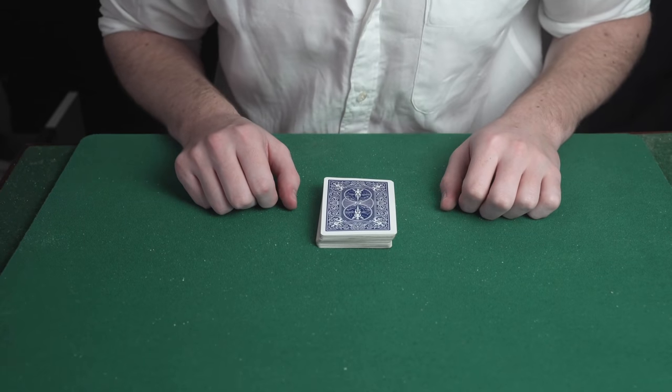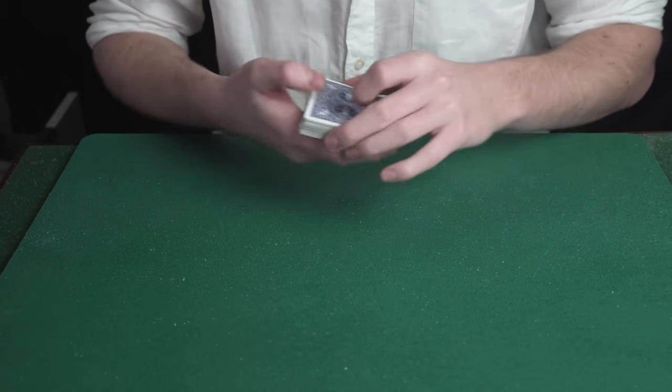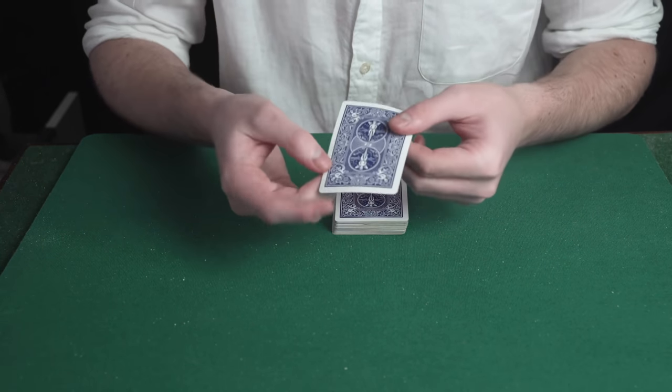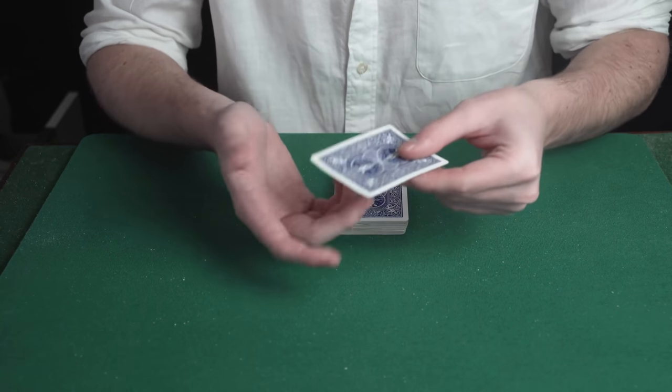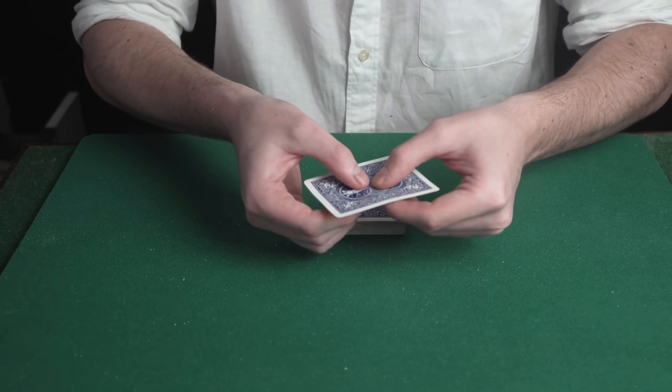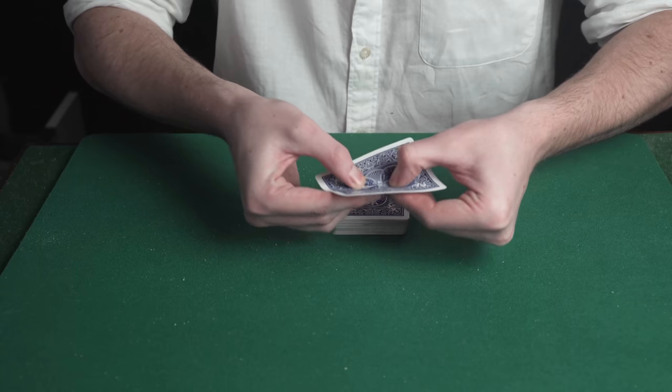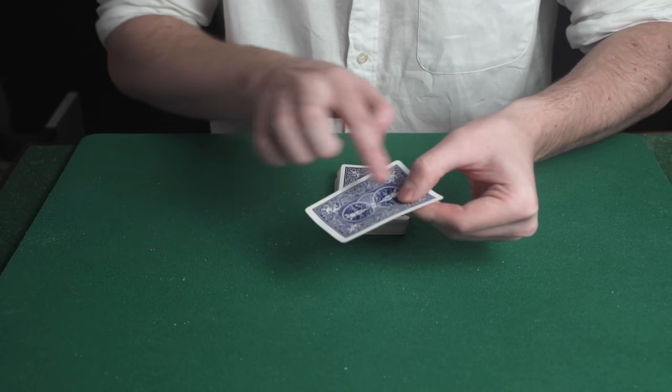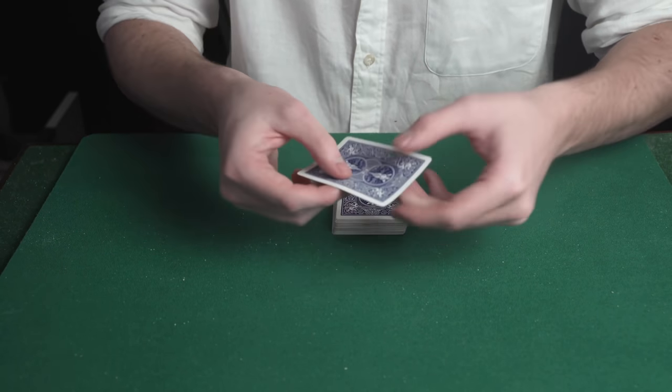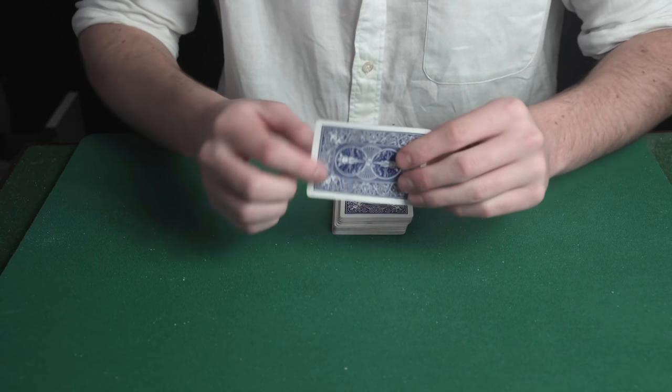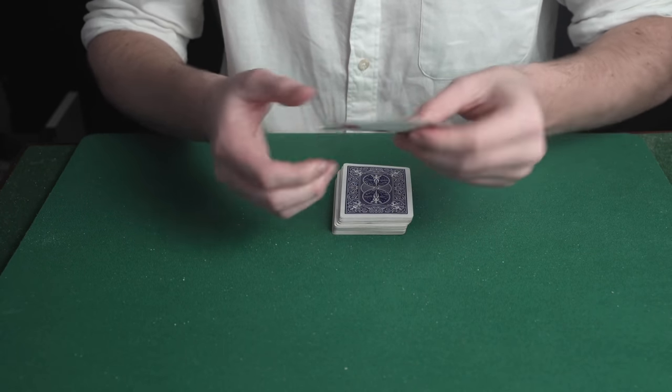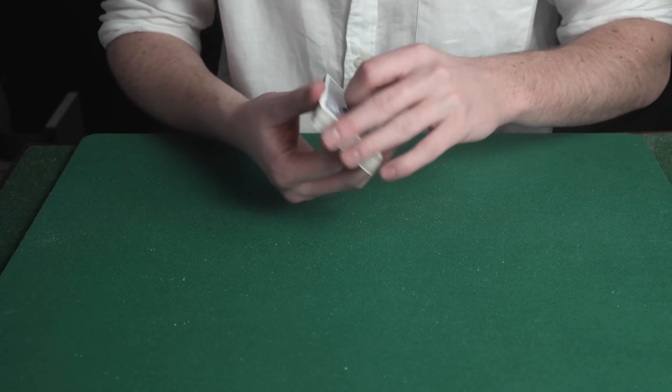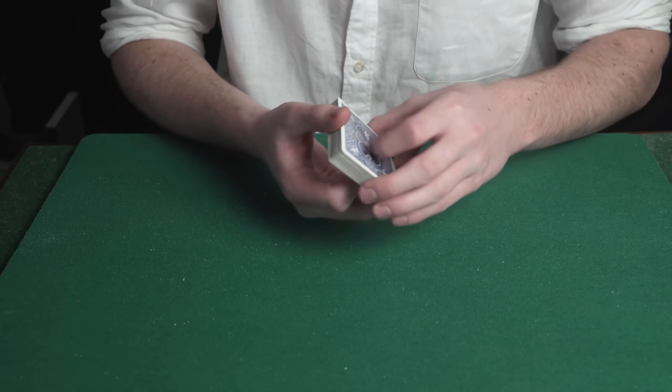This is a really easy effect you can do with any deck of cards. The first thing you need to do beforehand is prep one card and crimp it. To do this, place both thumbs in the middle of the card and move outwards and this will bend the card in a diagonal position. Then do it down the other diagonal and you've created your crimped card. This puts a slight bend in the card which will allow us to flick it later on.